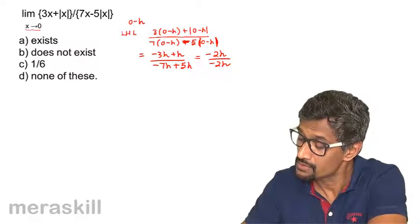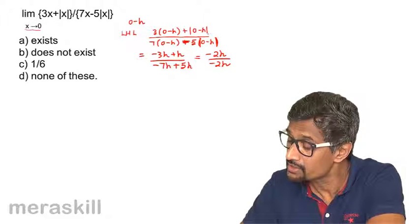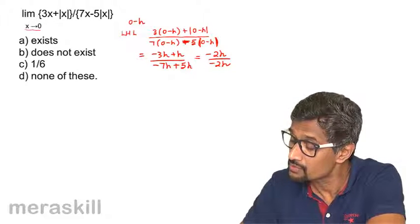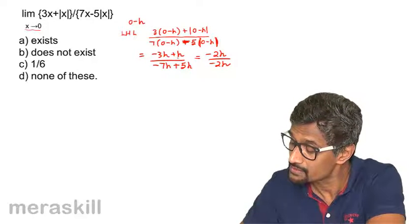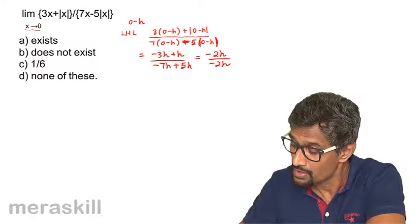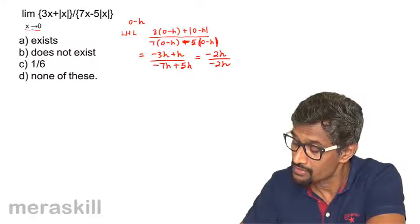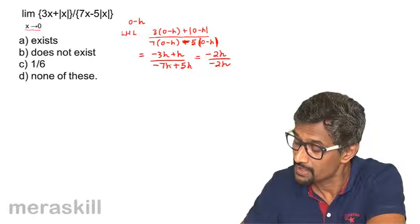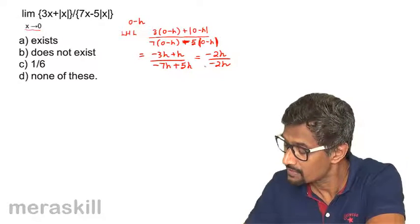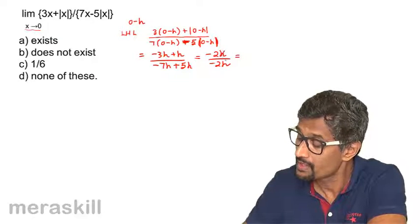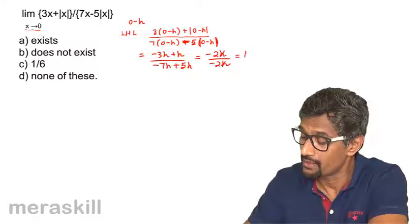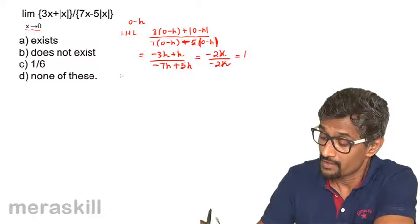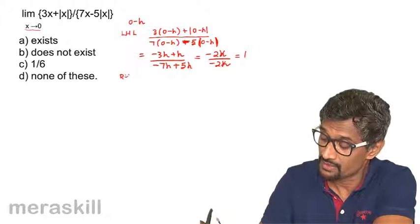The absolute value of (0 minus h) is plus h, and 7 times minus h is minus 7h, and minus 5 times (0 minus h) is plus 5h. So minus 7h plus 5h gives minus 2h. This simplifies to 1. The left-hand limit is 1. Now let's take the right-hand limit.